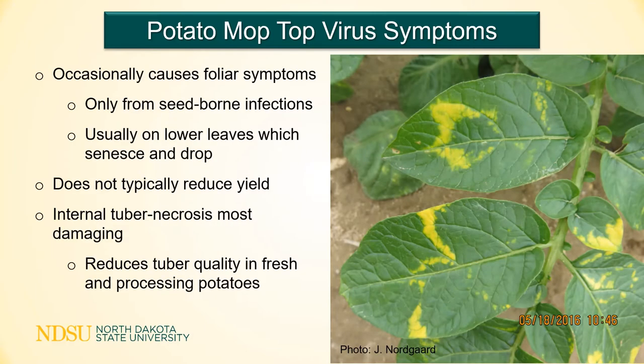PMTV can cause foliar symptoms including stunting, mottling, chevrons, and yellow blotches or rings, but these are only rarely seen in the field. Foliar symptoms occur from seed infections; they do not develop from soil-borne infections. These foliar symptoms can be easily confused with those induced by alfalfa mosaic virus and typically occur on lower leaves. Once ground cover is achieved, these leaves senesce due to lack of sunlight and essentially disappear as the season progresses.